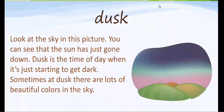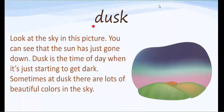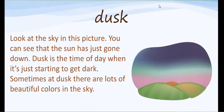Our next word is the word dusk. Look at the sky in this picture — you can see that the sun has just gone down. Dusk is the time of day when it is just starting to get dark. Sometimes at dusk there are lots of beautiful colors in the sky. This is called dusk. Let's say the word: dusk.